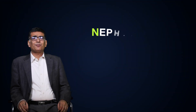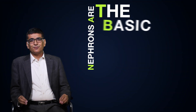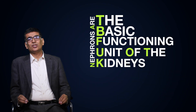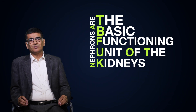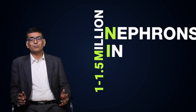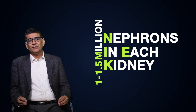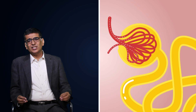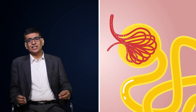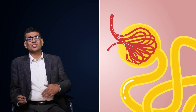So, nephrons are the basic functioning unit of the kidney. Each kidney is made up of around 1 to 1.5 million nephrons. Basic functioning unit means that it does all the functions which a kidney does.